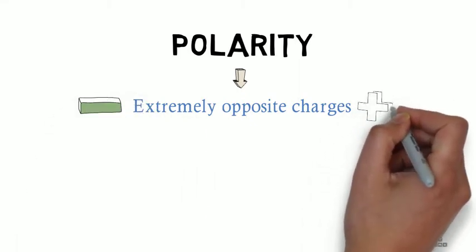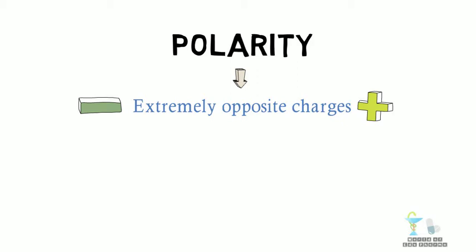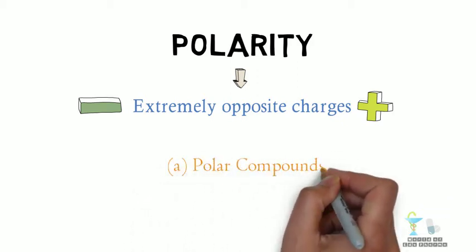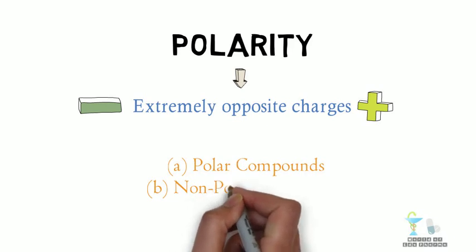In chemistry we have two types of compounds: number one, polar compounds, and number two, non-polar compounds.